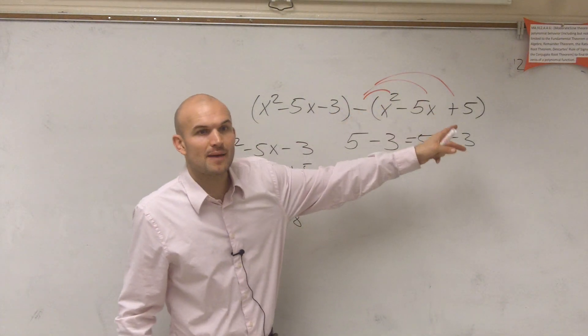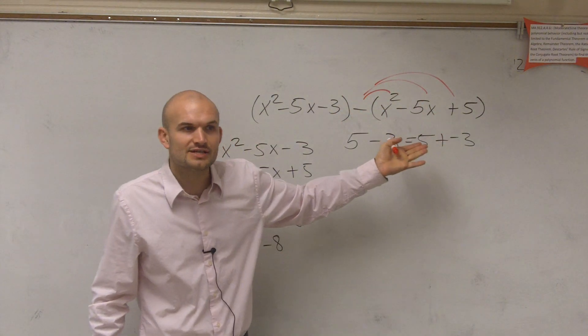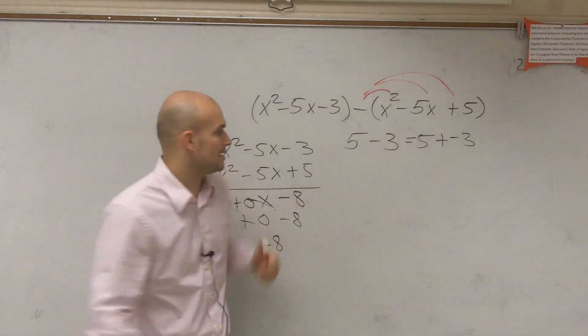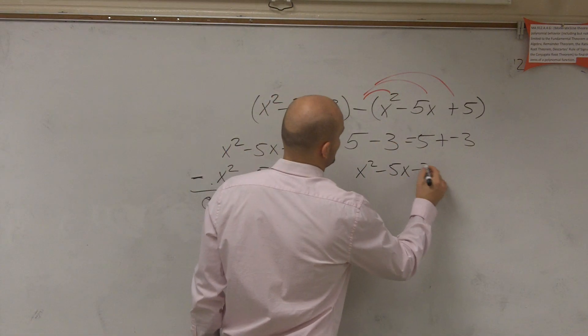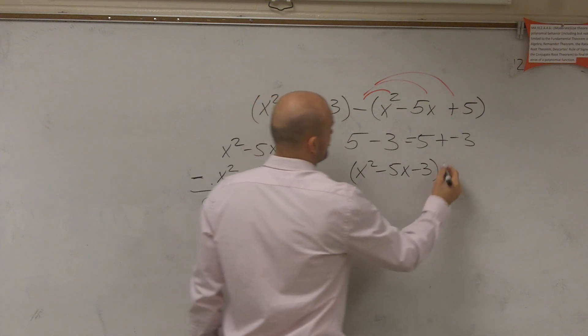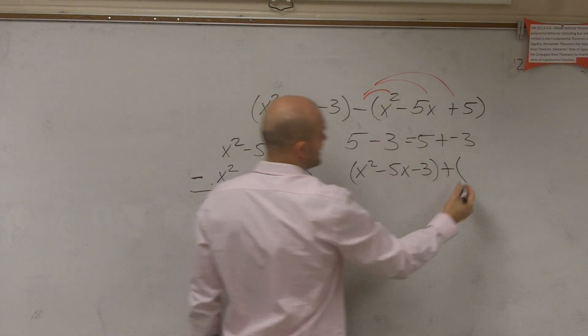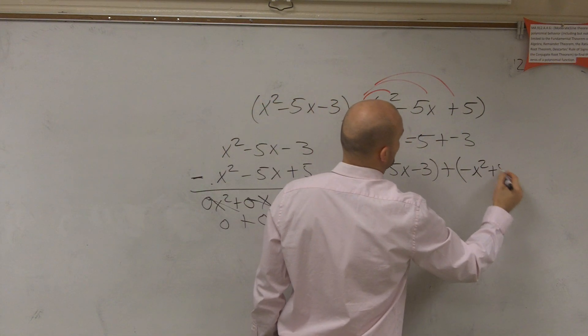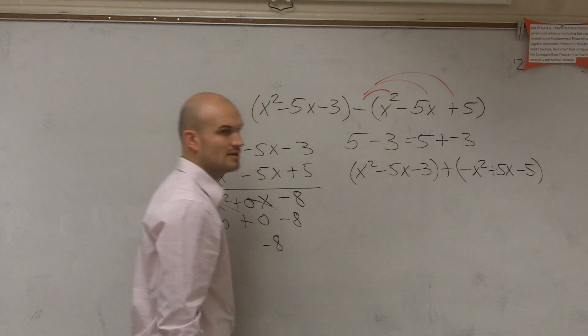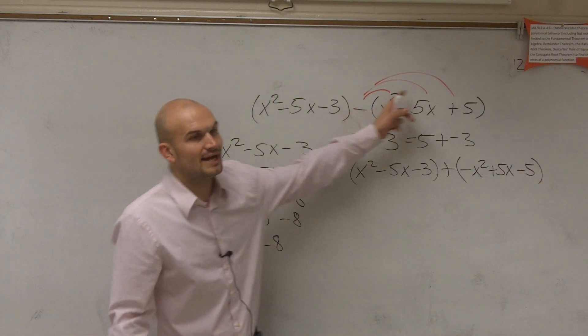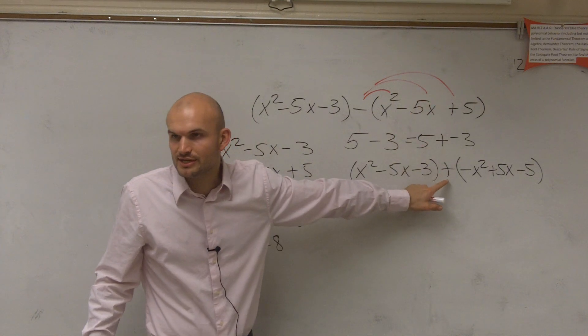So if I apply the distributive property, that's the same thing as changing it from a subtraction to an addition problem. So therefore, really, it's x squared minus 5x minus 3 plus, and then if I just apply the negative to each one of these terms, x squared plus 5x minus 5. So you can apply the distributive property and change it to an addition problem.